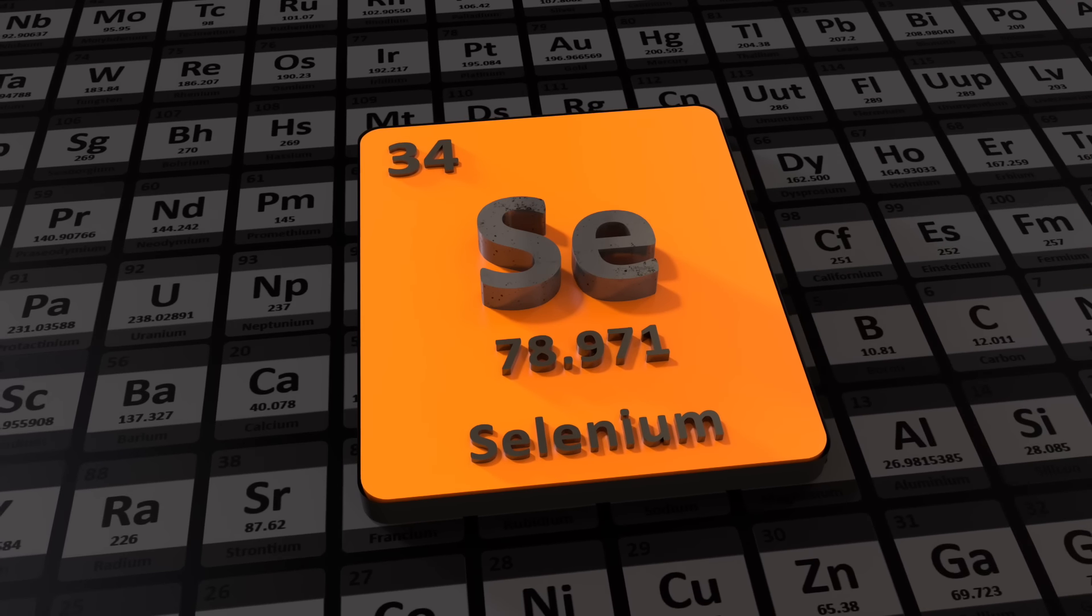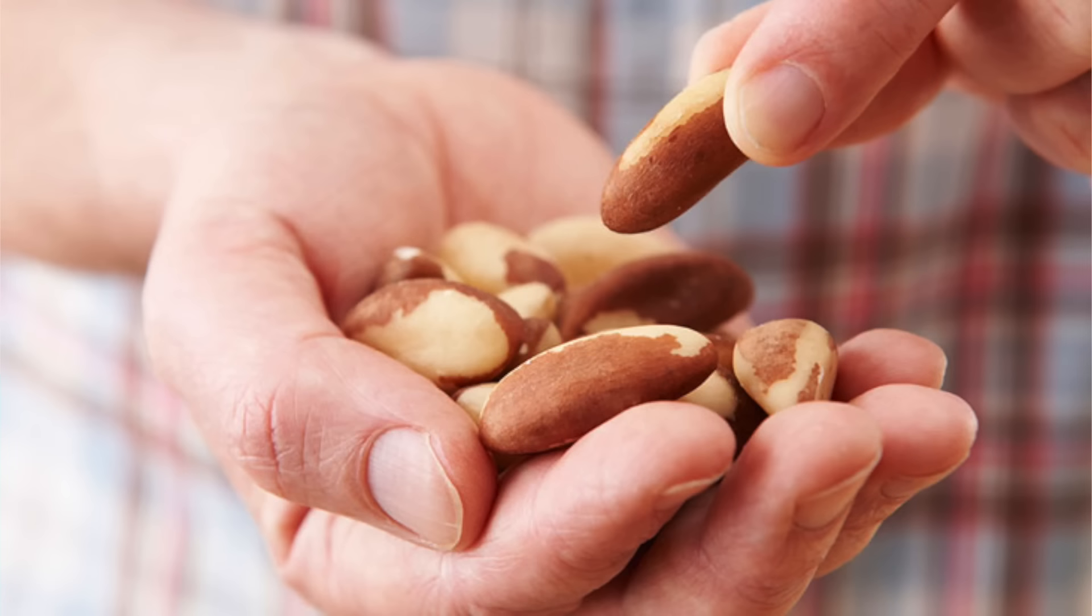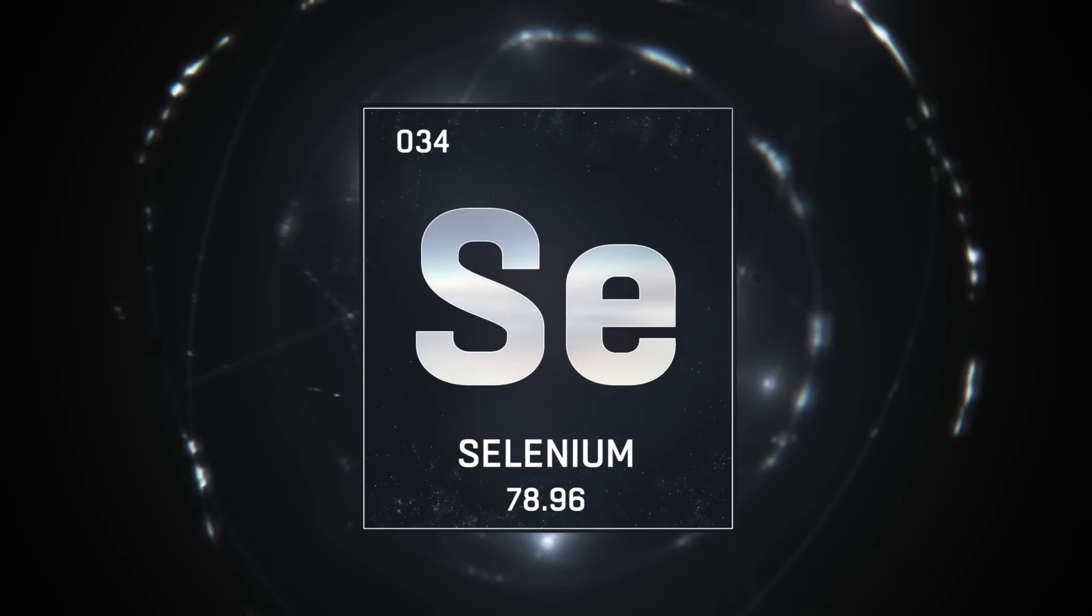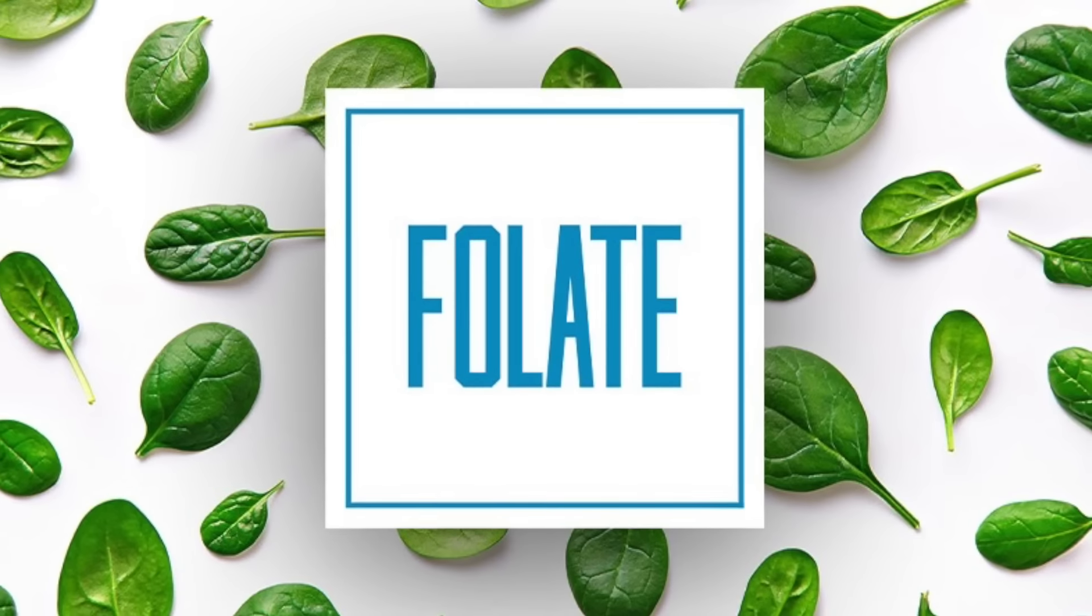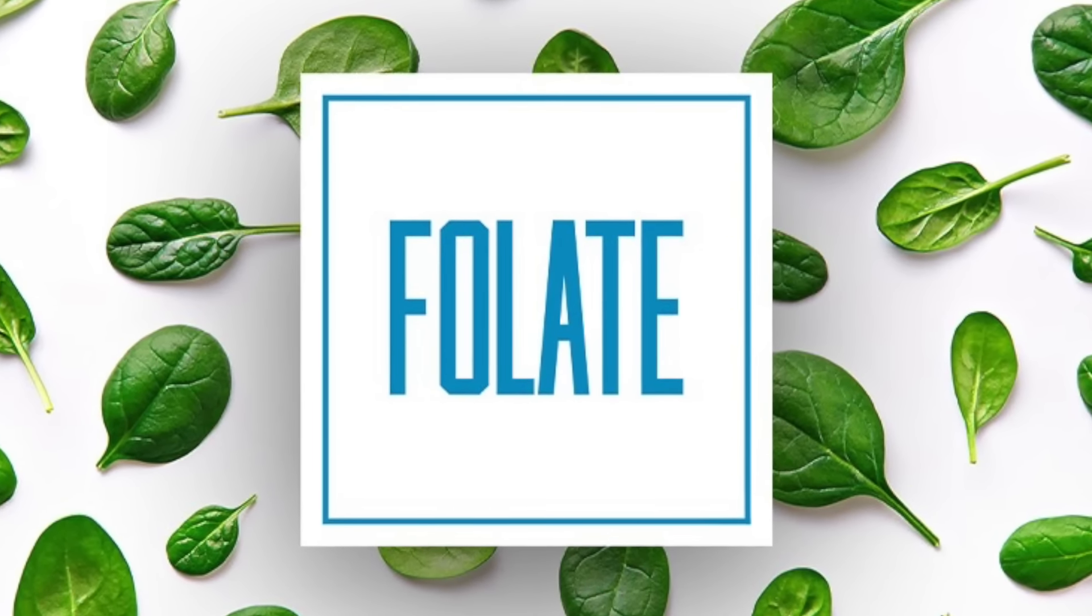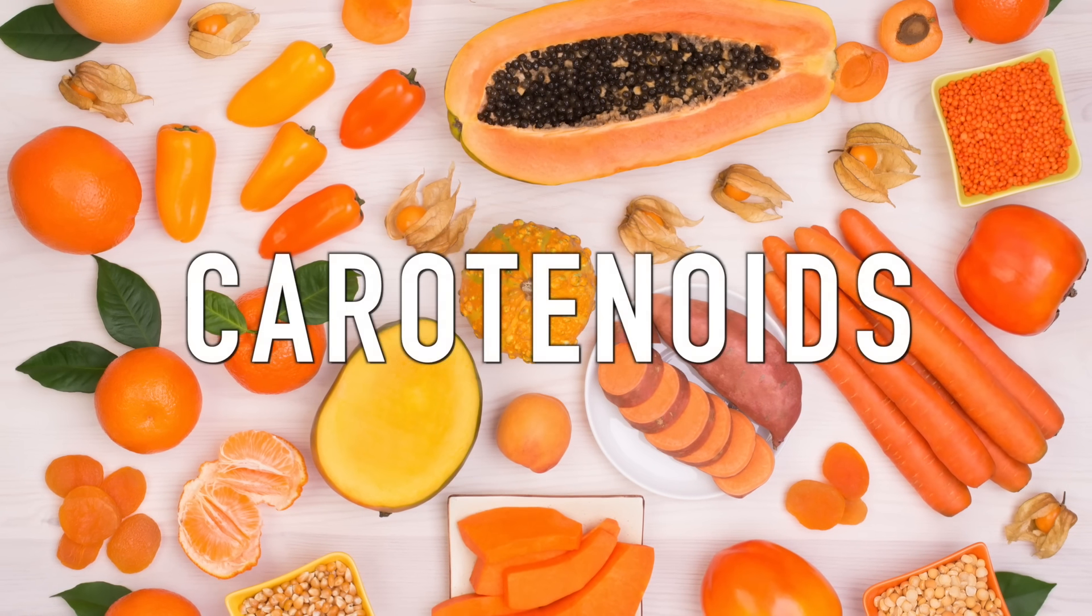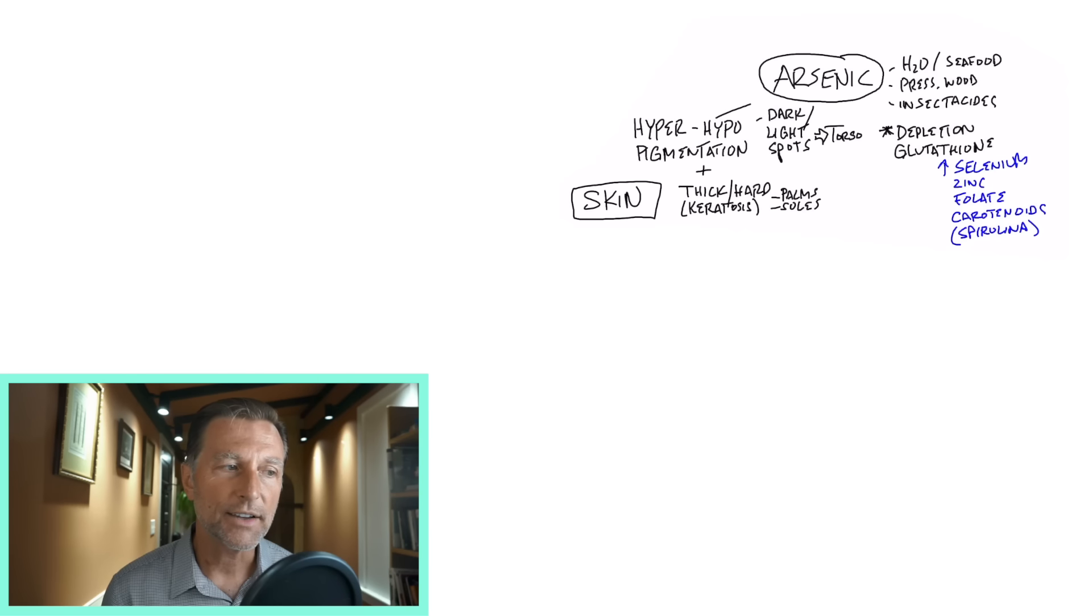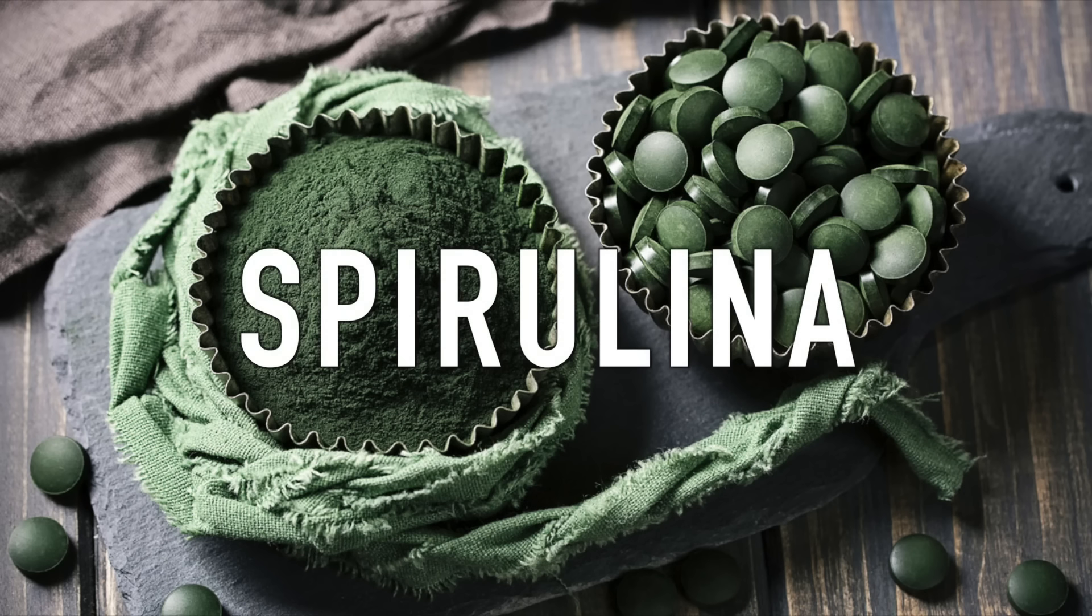And that would be selenium - one Brazil nut will give you a good amount of selenium. Selenium is also naturally in seafood. Zinc is number two, folate which is one of the B vitamins, and carotenoids which is an antioxidant in a lot of vegetables. One remedy for arsenic is spirulina, which can be protective.